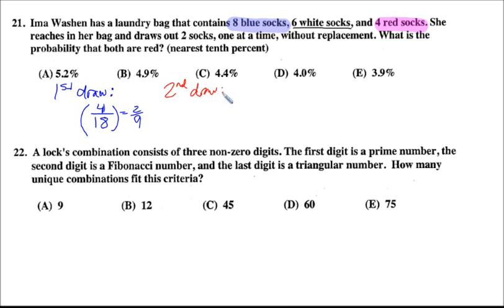On her second draw, the important thing is without replacement. So she does not replace the sock. She doesn't put it back into the pile. What that means is this second probability, first of all, assuming she got a red sock the first time, so there's one less red sock in the pile.